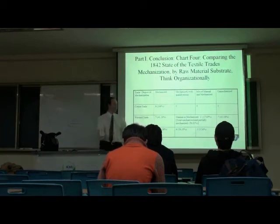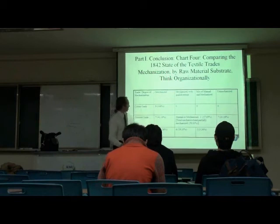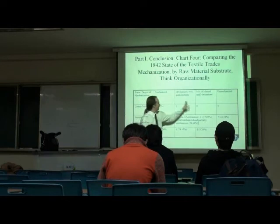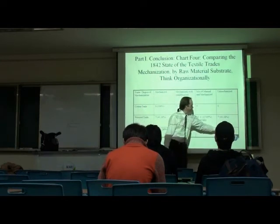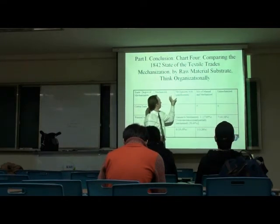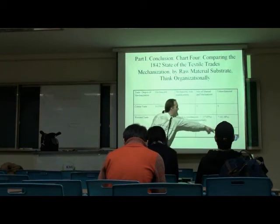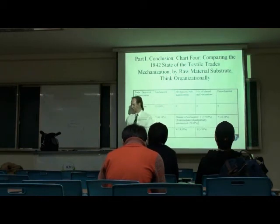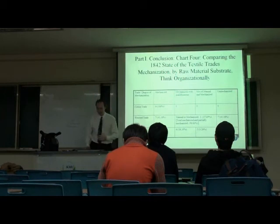The wool trade, very decentralized. Mechanized, the smallest amount is mechanized. And if you total all these, 70% is mechanized or totally unmechanized. So wool remained unmechanized.